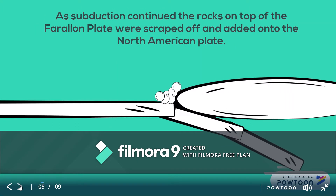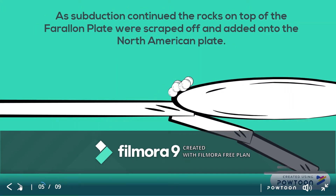As the Farallon Plate subducted, the less dense rocks on the top of the plate were scraped off and added to the North American Plate. This process is called accretion. These scraped-off rocks get smashed onto the North American Plate and get compressed, adding landmass to the coast of California.